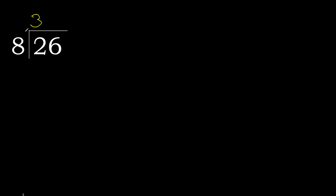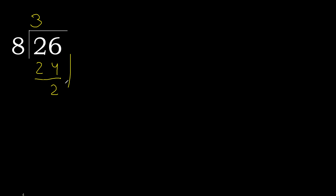Multiplied by 3: 24 is not greater. Subtract: 26 minus 24 equals 2. There is no next digit, therefore complete. Always complete with 0 here, with a decimal point.